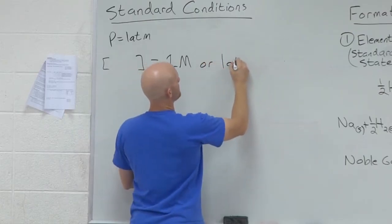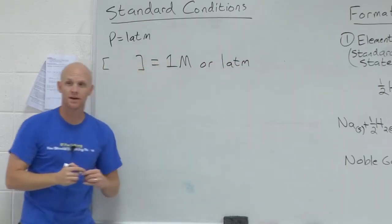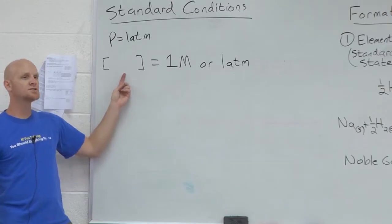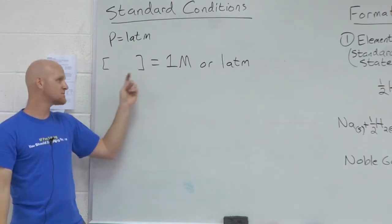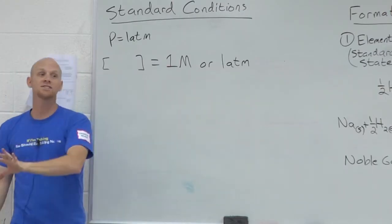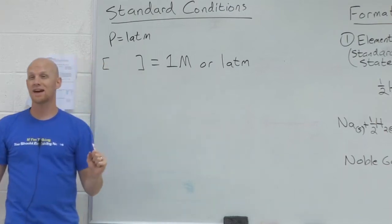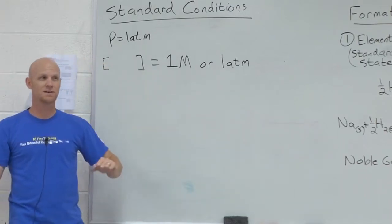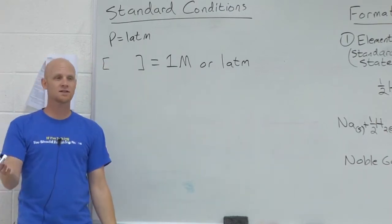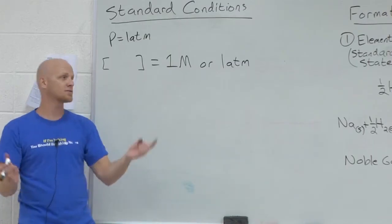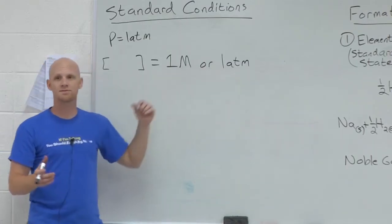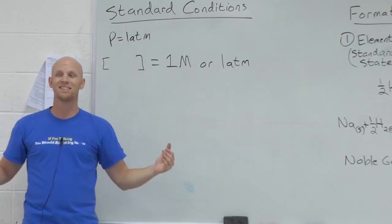For gases, their partial pressure is one atmosphere. But either way, all concentrations for aqueous and gassy species equals one. Reactant side and product side. So standard conditions, kind of a funky set of conditions. You already have equal amounts of reactants and equal amounts of products. One molar or one atmosphere concentrations for everything. That's standard conditions.